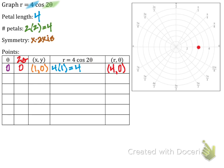For the next point, I'll try theta equals pi over four, because two times pi over four is pi over two, which is a unit circle value. We have to choose theta carefully so that n-theta lands on a usable unit circle value. Plugging in for pi over two, I get the ordered pair (0, pi/4), which places a point at the center. You're always going to get a center point with roses.